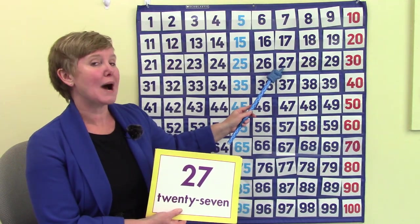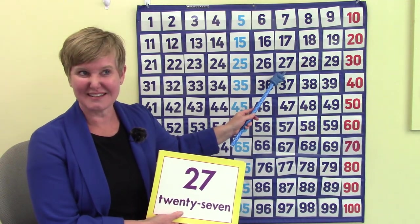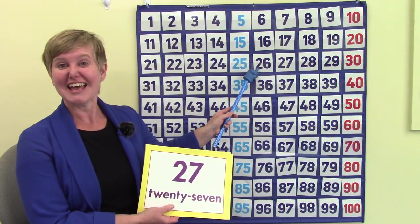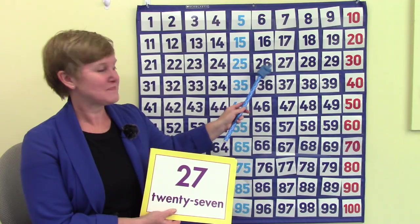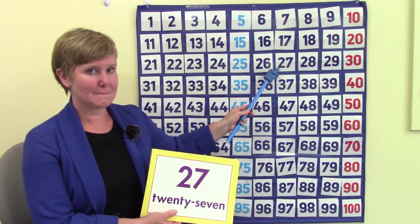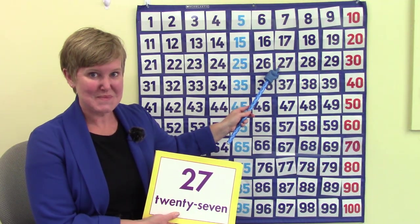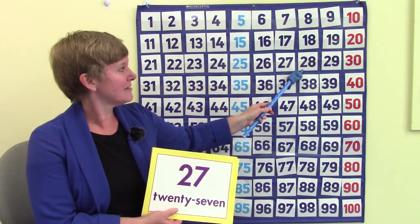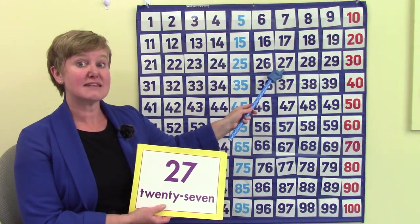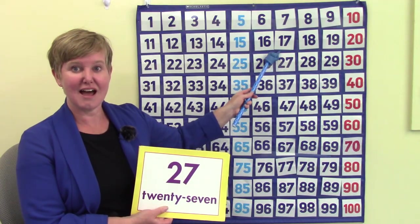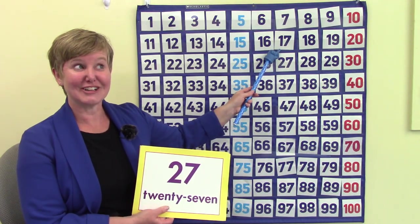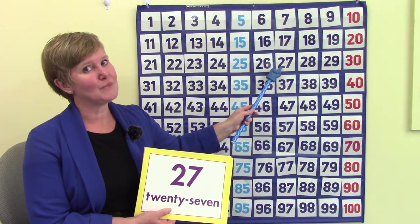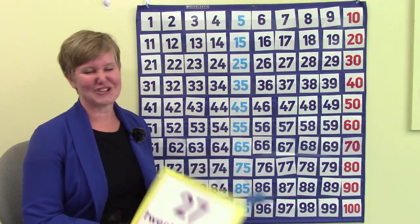What is 1 less than 27? We're going to look to the left, to the left — it's 26. What's 1 more? 28. What would be 10 less than 27? We have to look up, up, up — it's 17. And 10 more? It's 37.